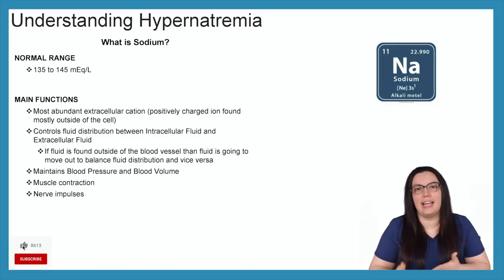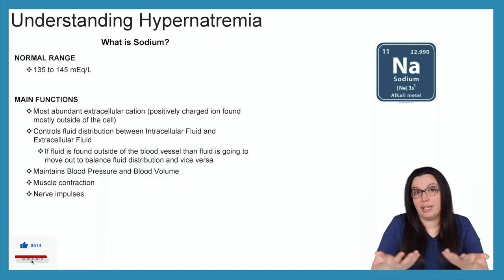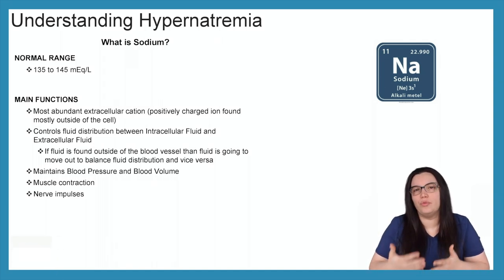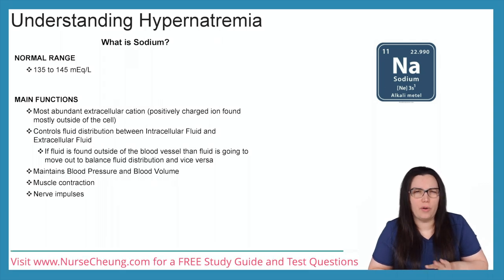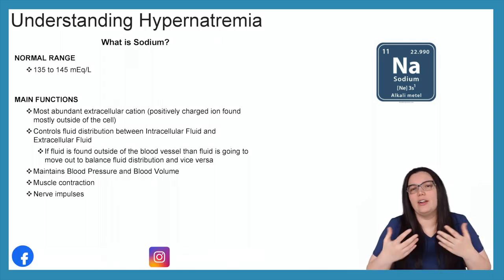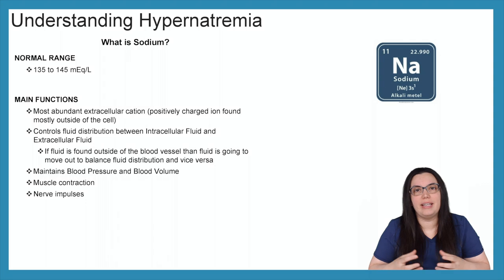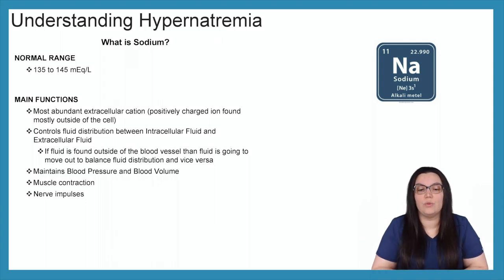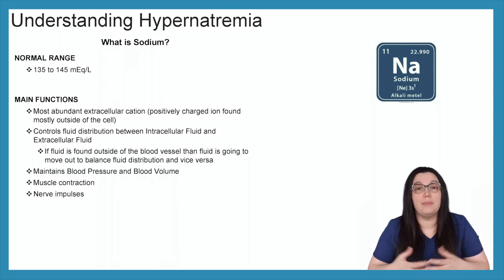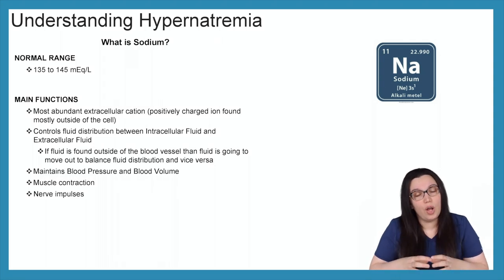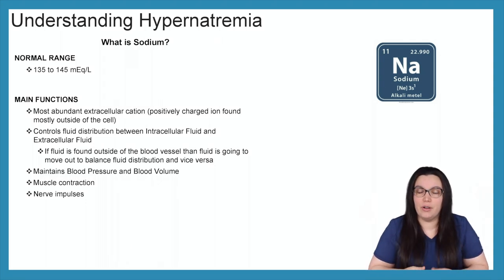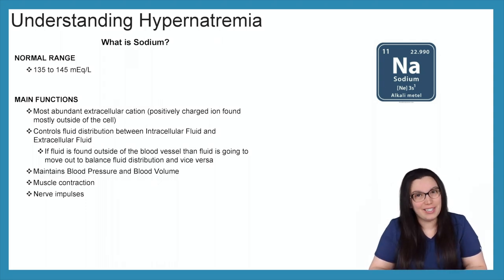In order to understand electrolyte imbalances, we really have to understand what the electrolyte is. With sodium, when we're looking at a normal range, it's usually between 135 to 145 milliequivalents per liter. A quick tip for your NCLEX and nursing school exams: anytime you have a serum electrolyte that's very high — in this case sodium at 135 to 145 — we know it's abundantly found outside of the cell. Whereas potassium, with a much smaller normal range of 3.5 to 5, is found abundantly inside the cell. So the lower the normal range, the more abundant inside the cell; the higher the normal range, the more abundant outside the cell.